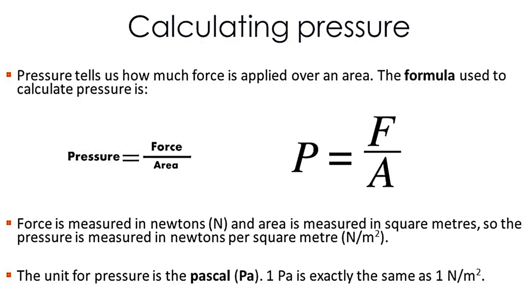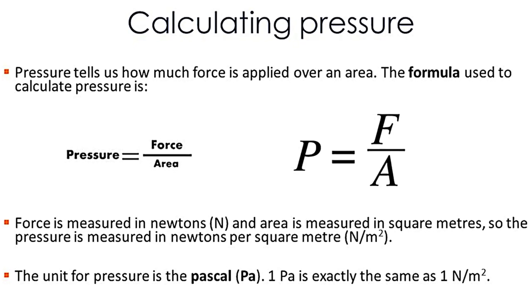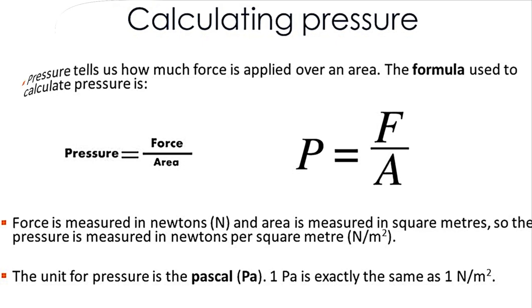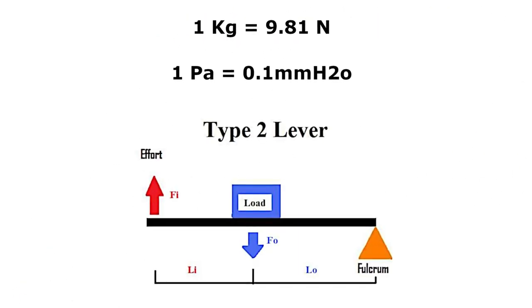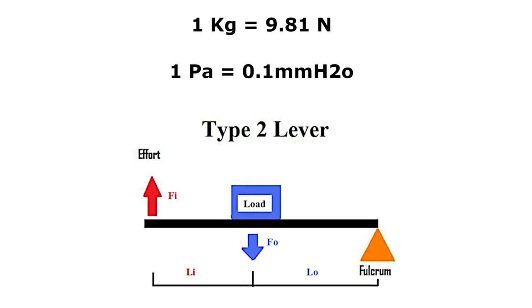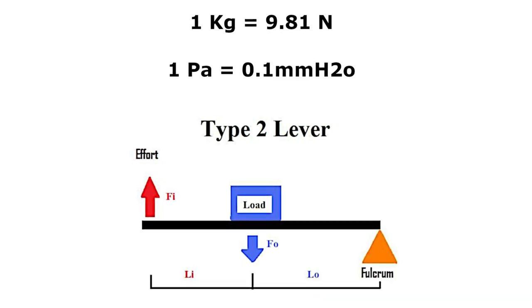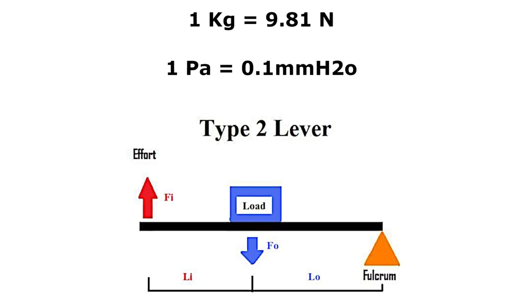But since the force is indicated in Newtons and the pressure in Pascal, it's convenient for us to do some conversions. 1 kg equals 9.81 N. 1 Pa is equivalent to 0.1 mm in water column.